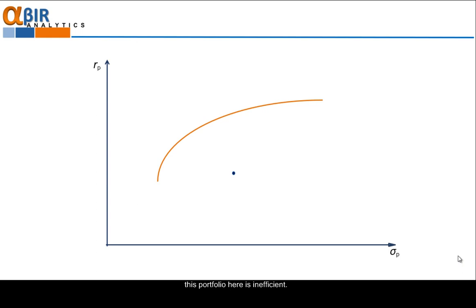For example, this portfolio here is inefficient. Why? Because there is a portfolio with the same risk but better return here. Or there is another portfolio with the same return but less risk here. If you apply the same logic for every one of these portfolios, you can conclude that all of them which are below the orange line are inefficient.